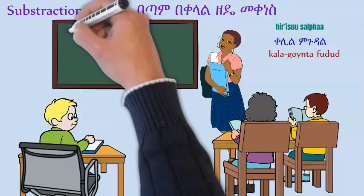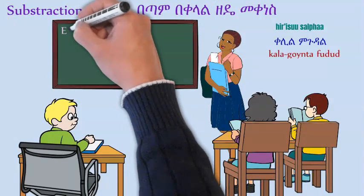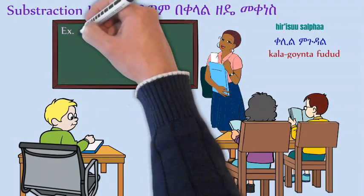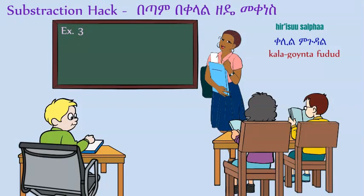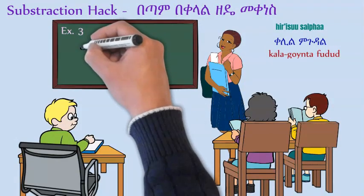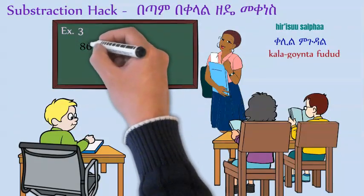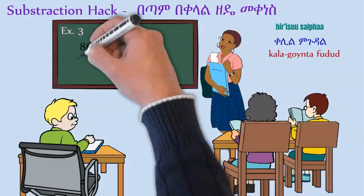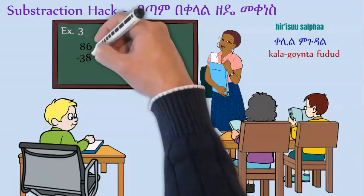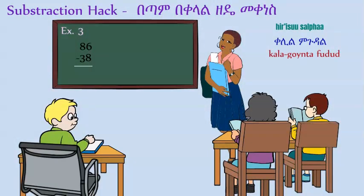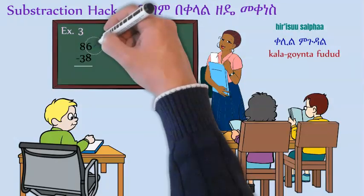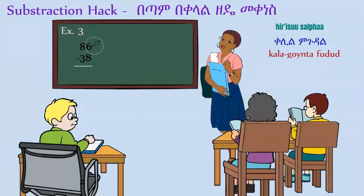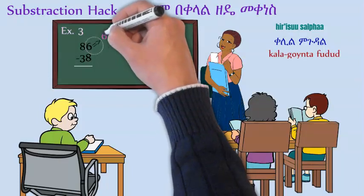Example three. Now let's say we have 86; let's subtract 38. Let's take the other approach, the new approach we're learning. So let's take six and add one to it.